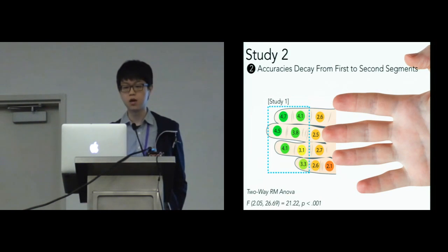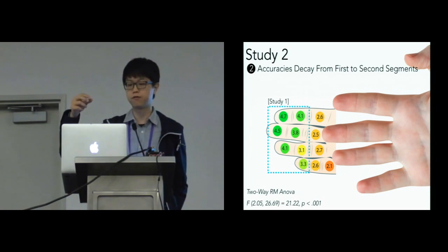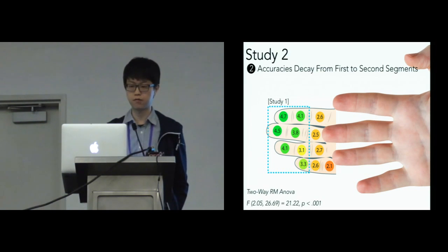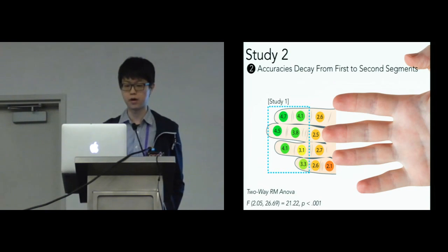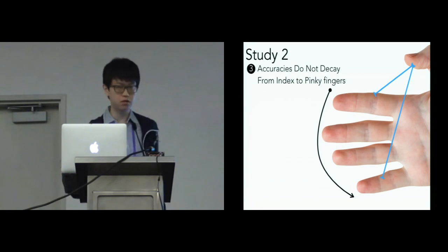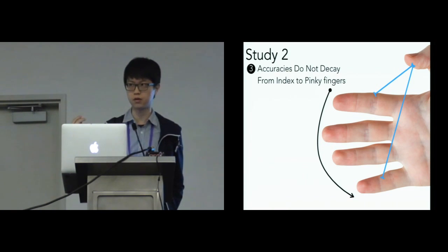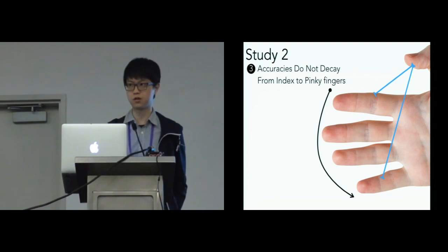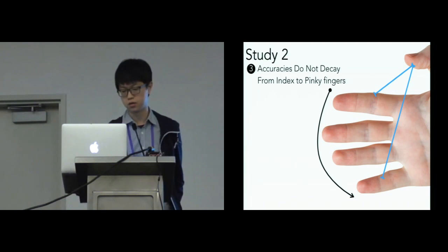The second finding is that accuracy significantly decayed from the first to the second finger segment. This is reasonable since in Study 1, participants rated higher physical comfort on the first finger segment, suggesting inner thumb movements cause more physical effort. The third finding, surprisingly, is that diagonal thumb movement did not affect accuracy. We originally thought motion effort would differ between tapping the index versus pinky finger, but the two-way repeated measures ANOVA indicates this is not the case.